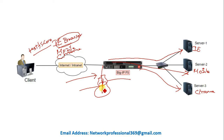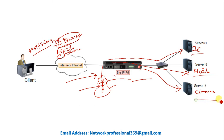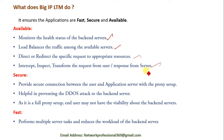We can also configure rules based on the type of device — for example, requests from a computer go to one server while requests from a mobile device go to another. Or we can route based on browser language: if the language is English, send to Server 1; if Tamil, send to Server 2; if another language, send to Server 3. This is what it means when we say F5 can intercept, inspect, and direct or redirect specific requests to the appropriate resource.